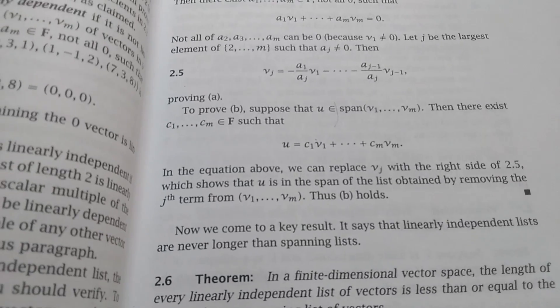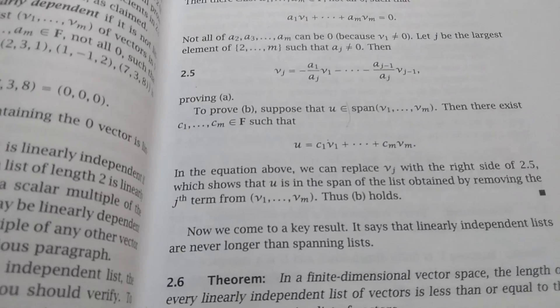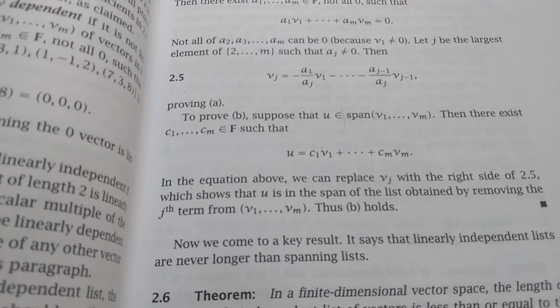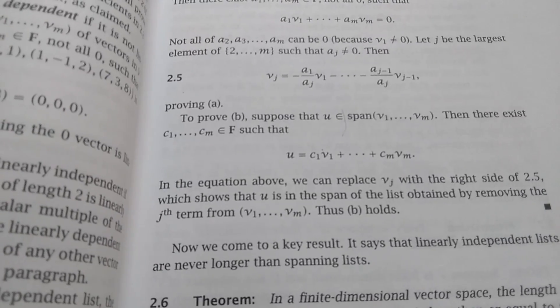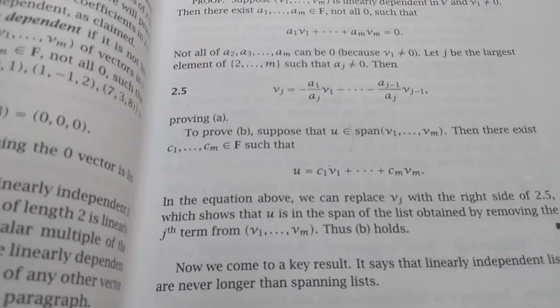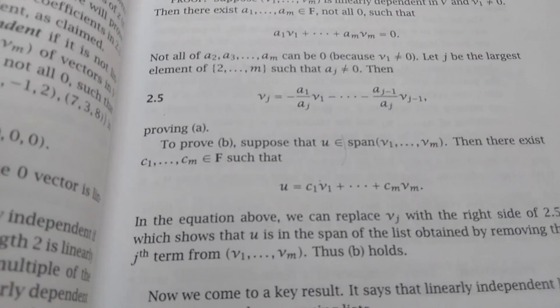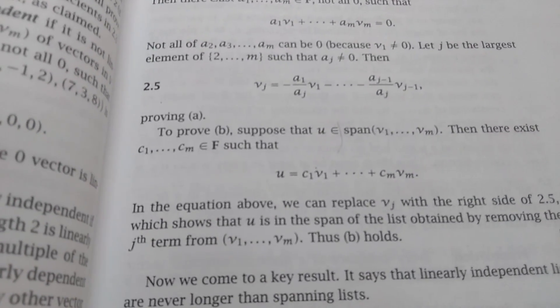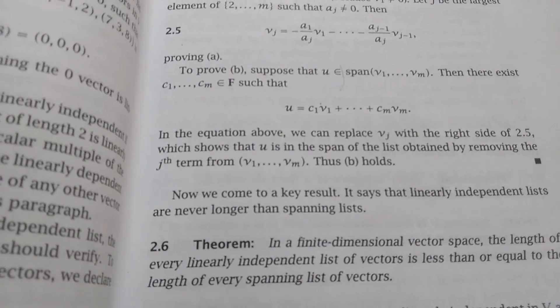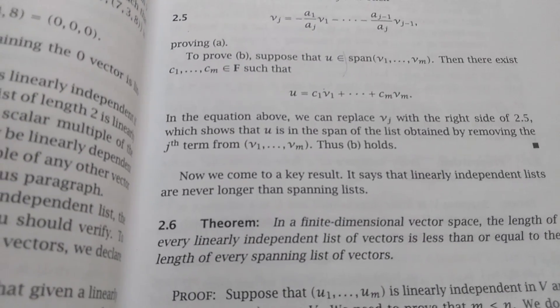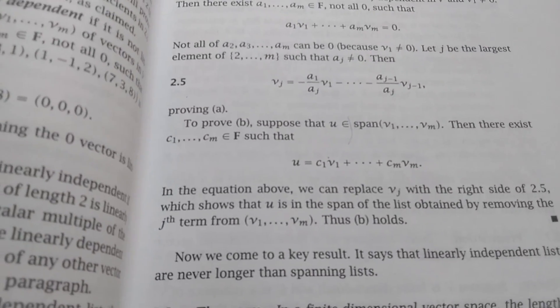And just to comment again on the title, Linear Algebra Done Right. The author does do it right. I mean, he claims he's doing it right because he's not talking about determinants until the end. But honestly, he's a really good writer. He's doing it right because he explains really well. It's a really good book. Sheldon Axler is definitely doing it right. I don't own this book, but I am seriously considering purchasing it and adding it to my library. I think I probably will just go ahead and buy this book.